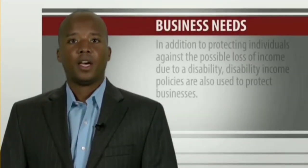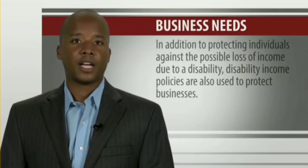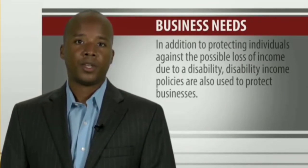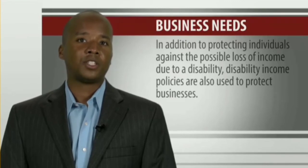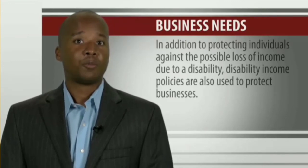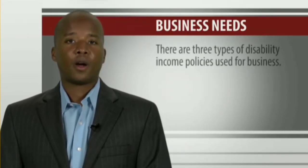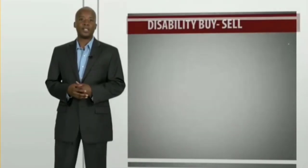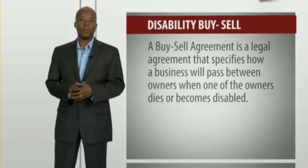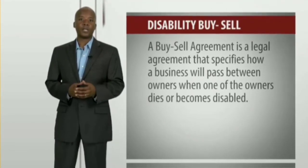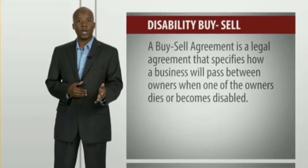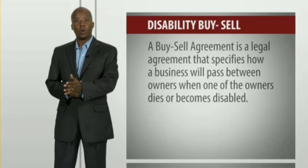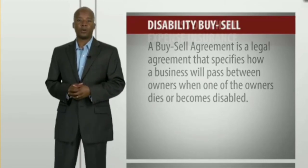In addition to protecting individuals against the possible loss of income due to a disability, disability income policies are also used to protect businesses. There are three types of disability income policies used for business. Disability buy-sell: a buy-sell agreement is a legal agreement that specifies how a business will pass between owners when one of the owners dies or becomes disabled.